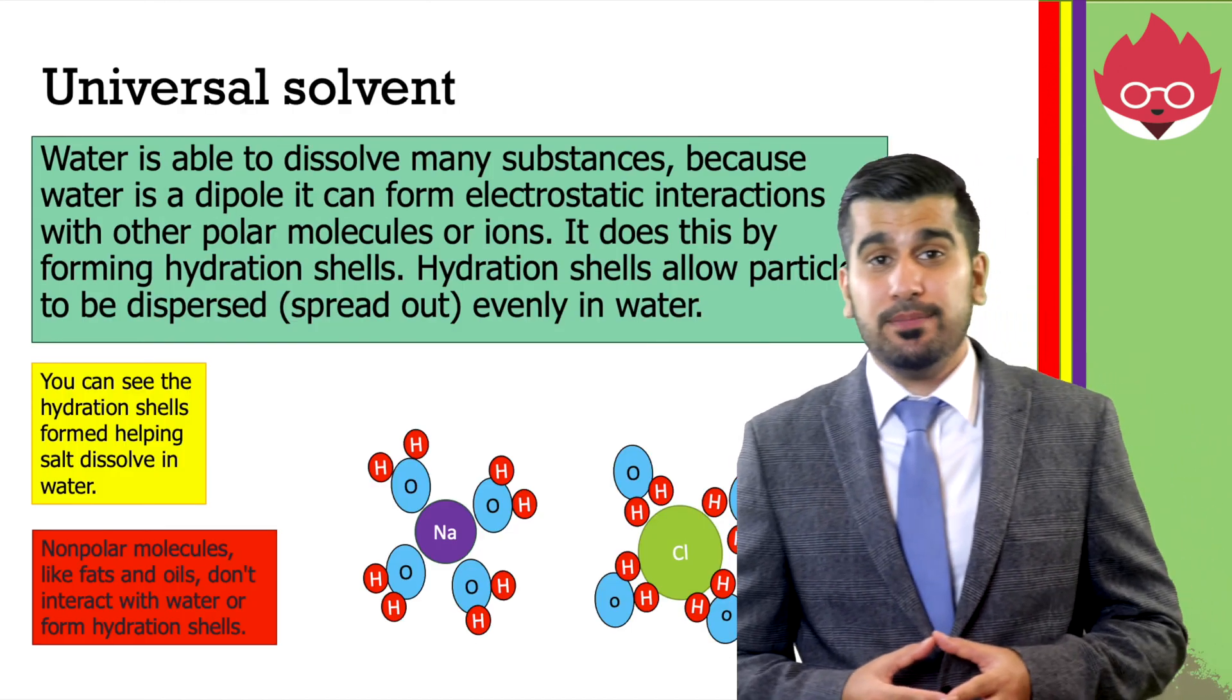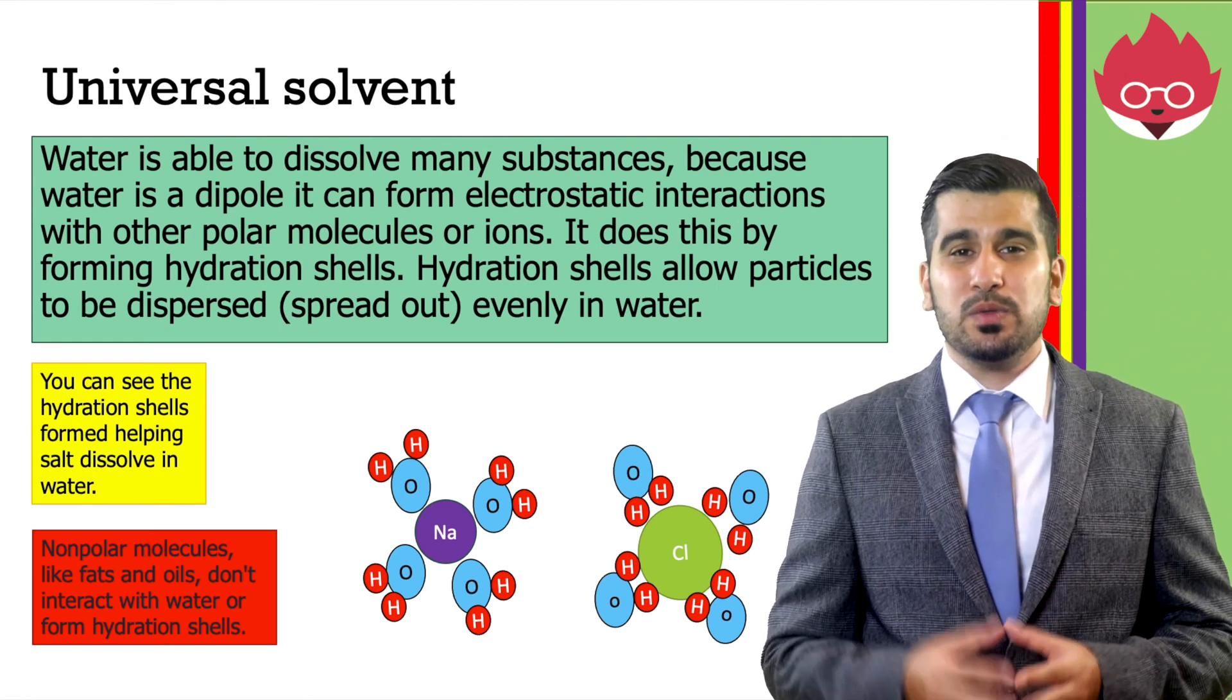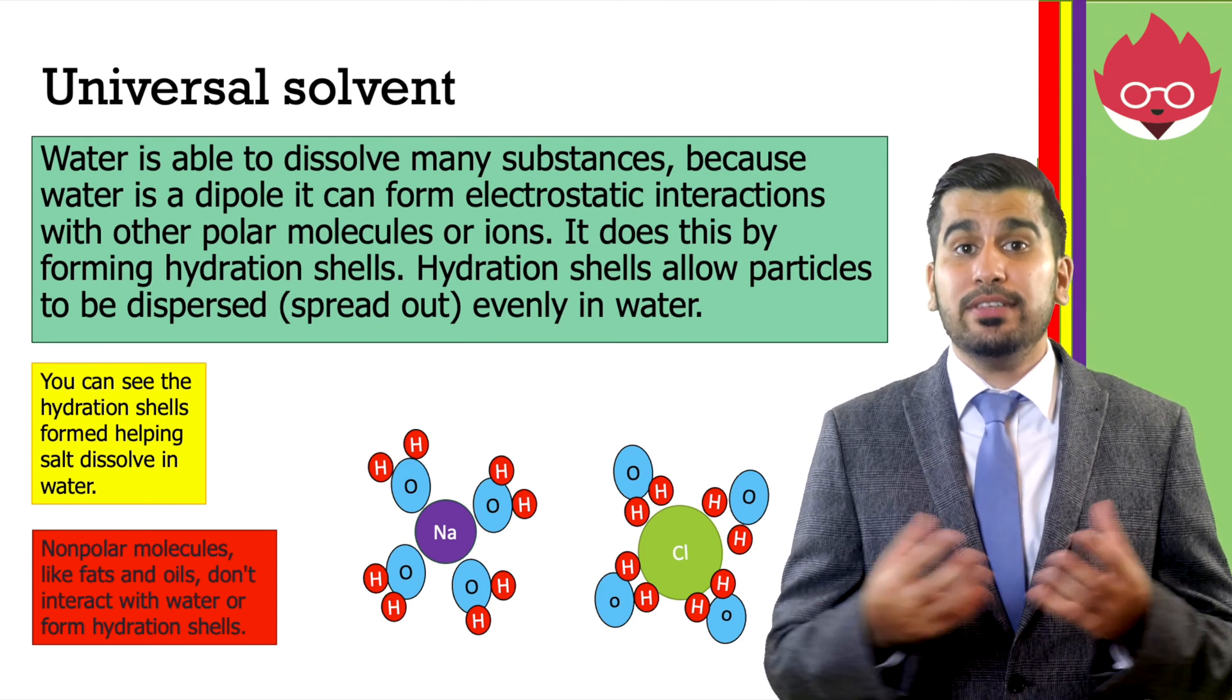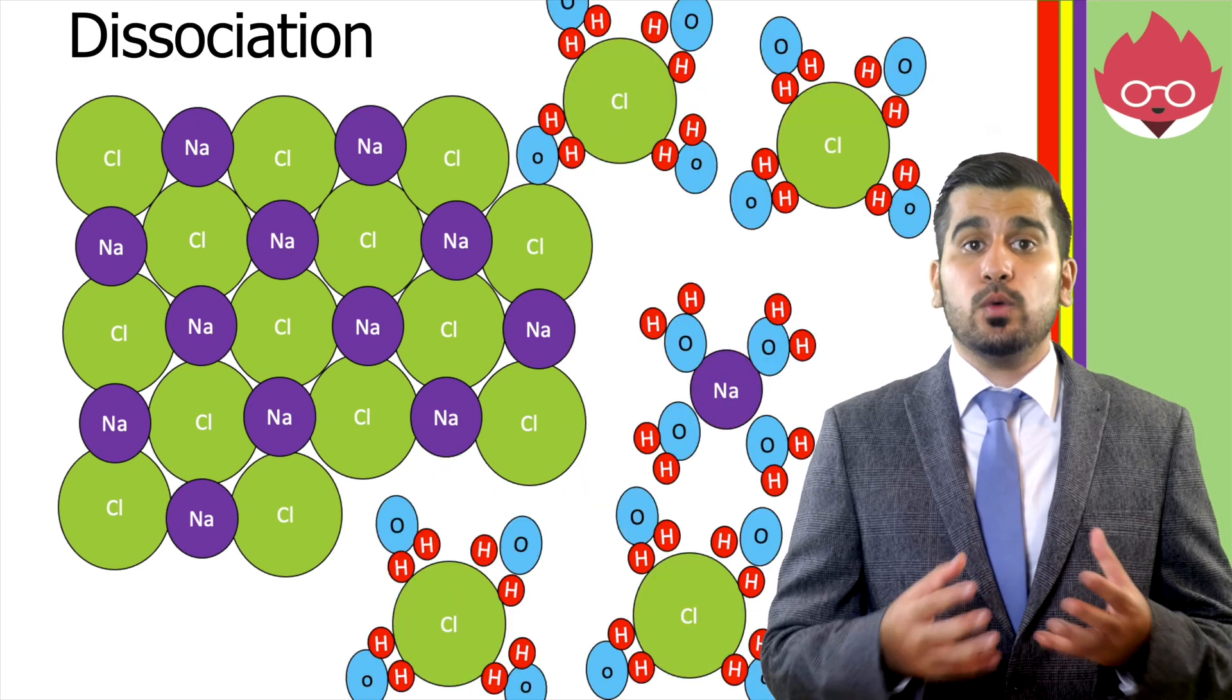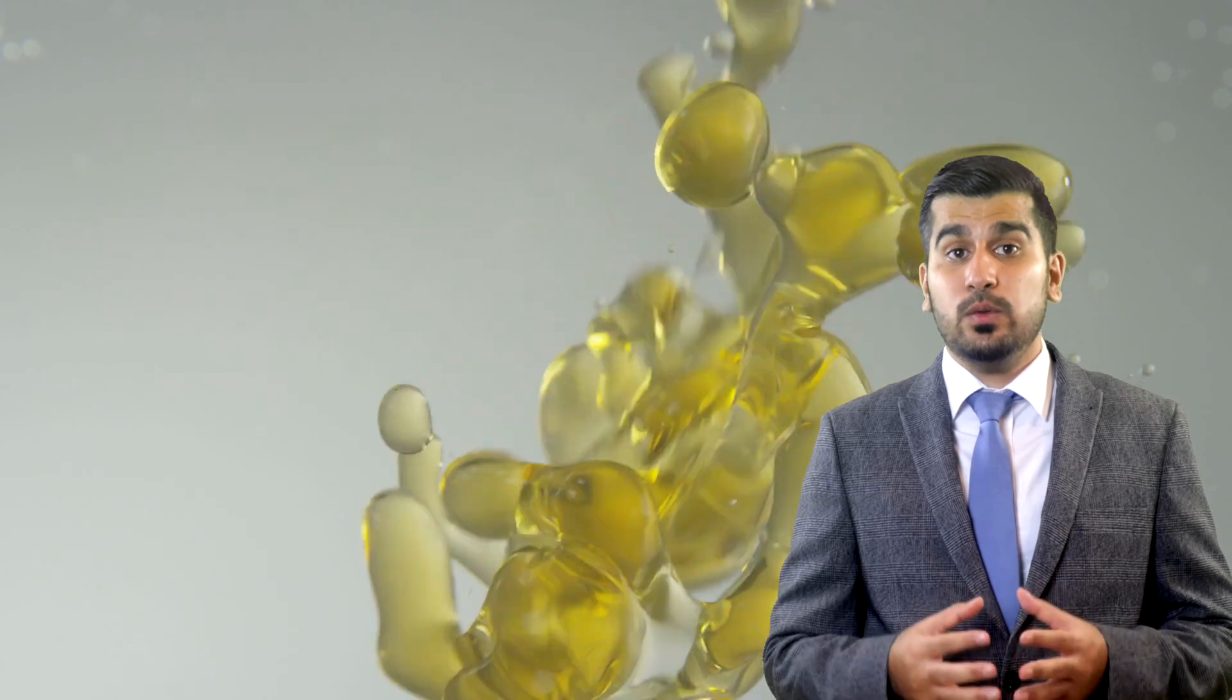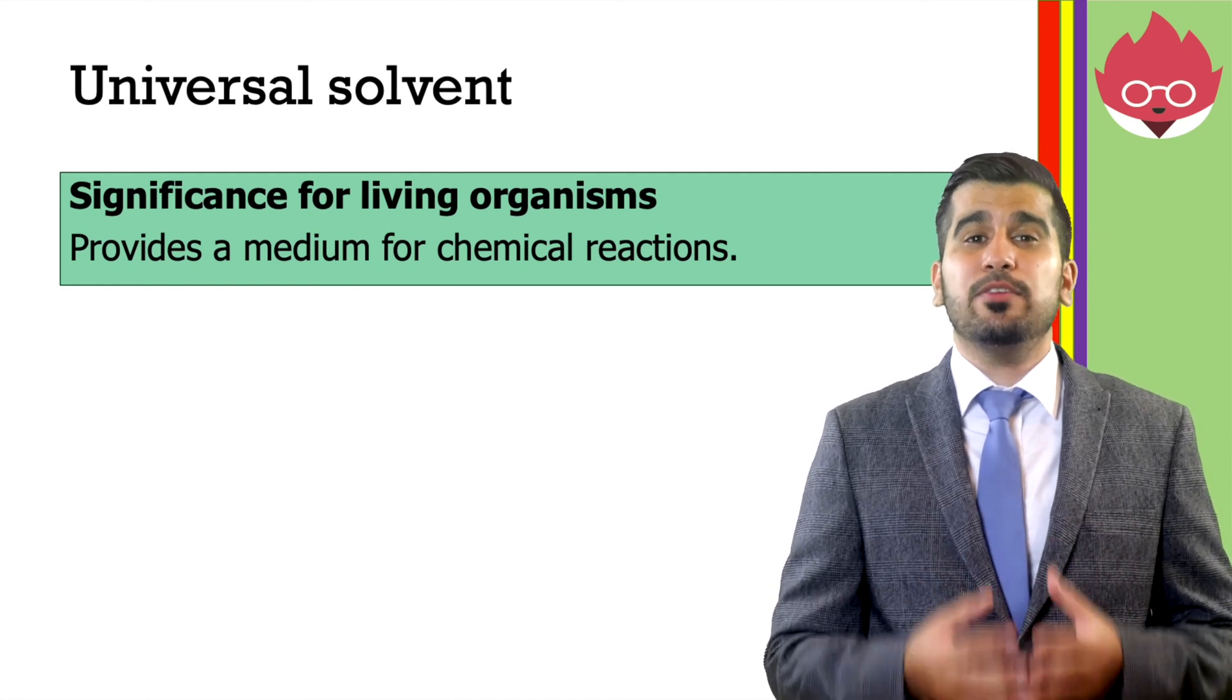Water is also a good solvent. It is able to dissolve many substances. Because water is a dipole, it can form electrostatic interactions with other polar molecules or ions. It does this by forming hydration shells. Hydration shells allow particles to be dispersed or spread out evenly in water. In this example, when salt is placed in water, the ions separate in a process called dissociation. You can see the hydration shells being formed, helping salt dissolve in water. Non-polar molecules like fats and oils don't interact with water or form hydration shells. The significance for living organisms is water provides a medium for chemical reactions.